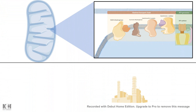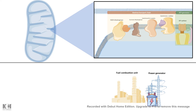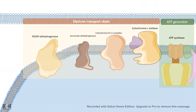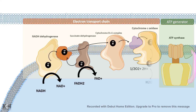The electron transport chain and ATP generation machinery is a lot similar to an electric plant. In the electric plant, there is a fuel combustion unit connected with a power generator — fuel is burned, and using that energy, a rotor converts it to electrical energy. Similarly, in the electron transport chain, the fuel combustion unit is the ETC itself, where electrons from NADH and FADH2 are transported across these complexes, and later used in complex 4 to reduce oxygen and form water.